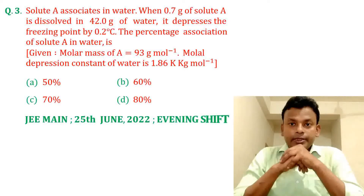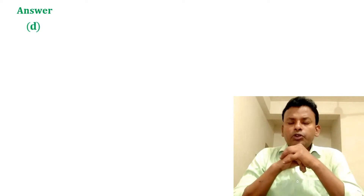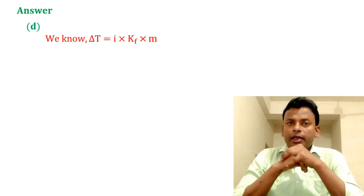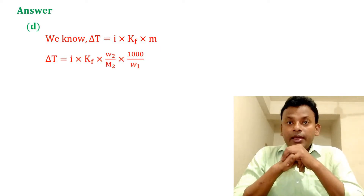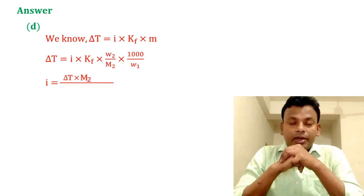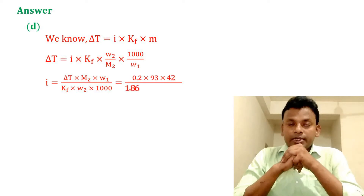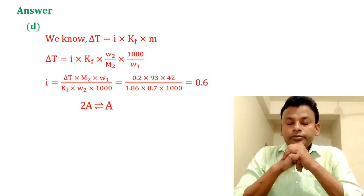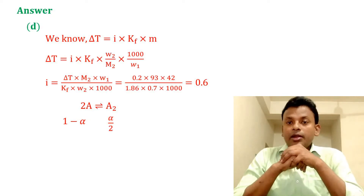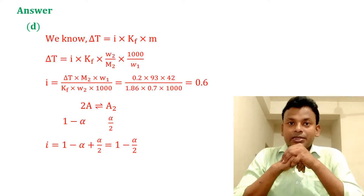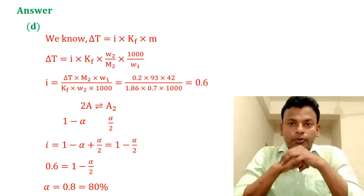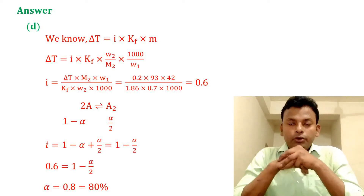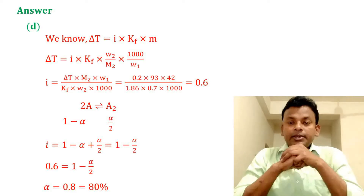Answer: Option D is correct. We know ΔT = i × K_f × m, where m = (w₂/M₂) × (1000/w₁). Putting in all values, i equals 0.6. For the association equilibrium 2A ⇌ A₂: i = 1 − α + α/2 = 1 − α/2. Putting the value of i, alpha equals 0.8, that is 80 percent. So option D is the correct answer.